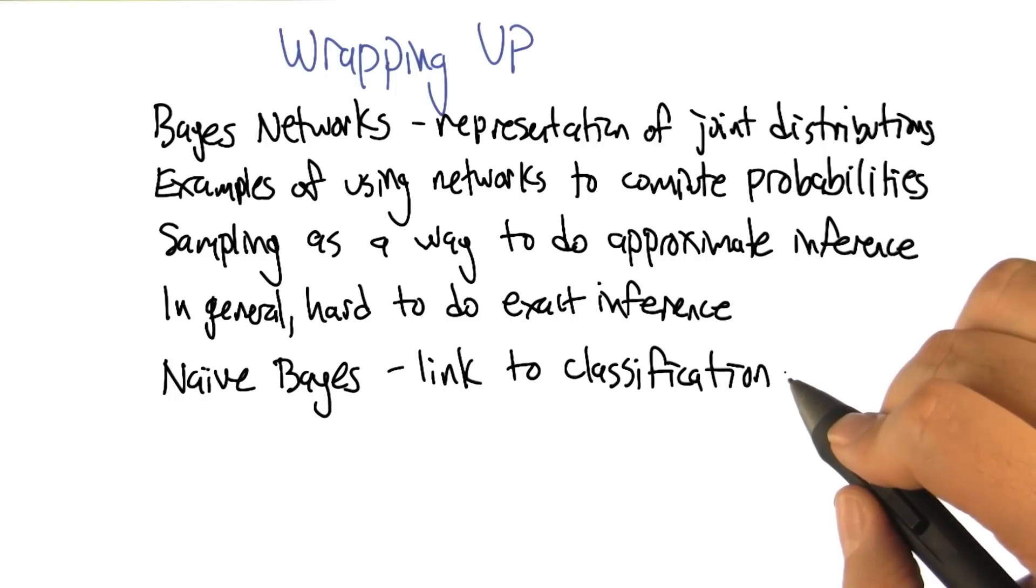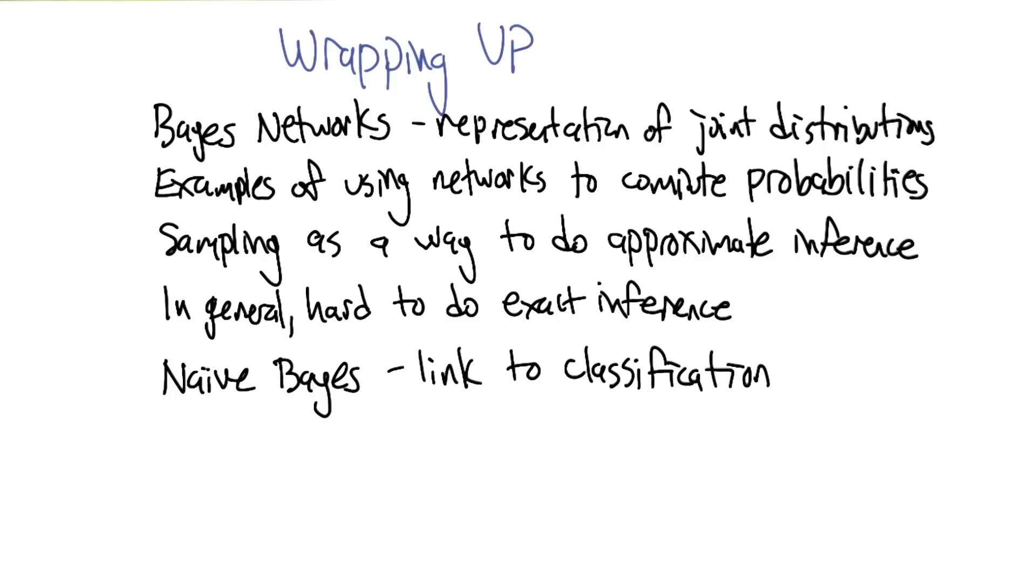So the other thing that I really liked about this, with this notion, this link to classification, Michael, is that when I was talking about Bayesian learning, what we ended up with at the end is this nice idea that we had a gold standard, right? We had a sort of way of talking about what the right hypothesis was and ultimately what the right classification was by computing these probabilities. And sometimes we couldn't do it because typically you can't actually do the for loop that requires you compute conditional probabilities of hypotheses given data over, say, an infinite number of hypotheses.